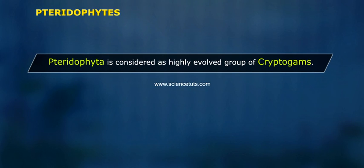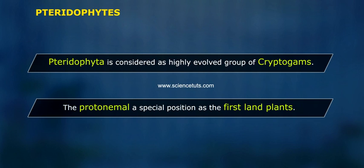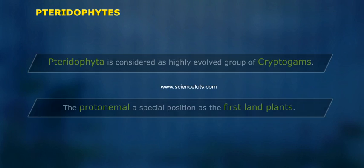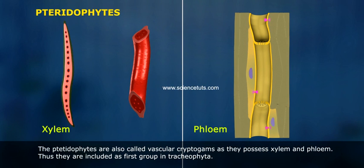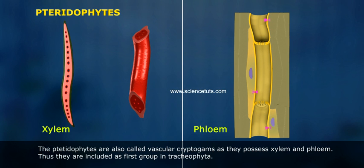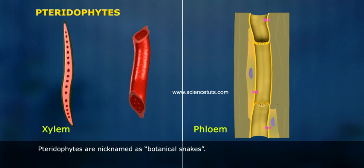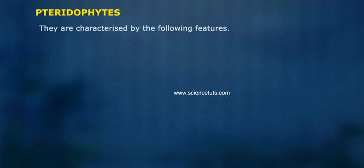Pteridophytes are considered a highly evolved group of cryptogams. They occupy a special position as the first land plants. The pteridophytes are also called vascular cryptogams as they possess xylem and phloem. Thus, they are included as the first group in Tracheophyta. Pteridophytes are nicknamed as botanical snakes.